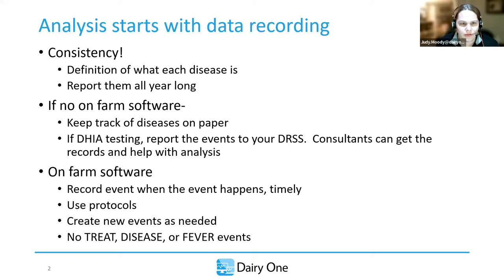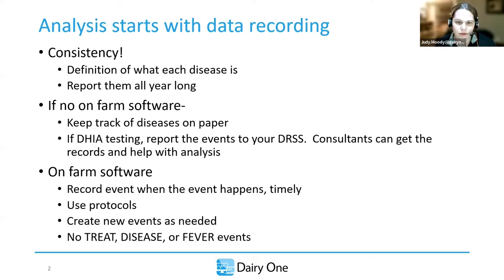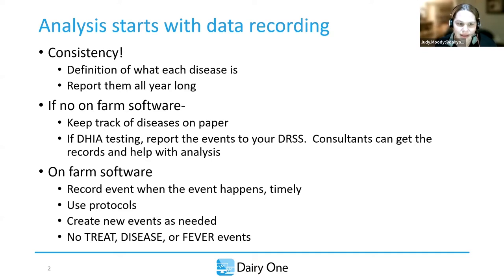For those on the call today that don't have on-farm software, keep track of your diseases on paper. If you're not testing, keep track of them in a notebook and share them with your consultants. If you are DHI testing, report your events to your record technician or DRSS, and the technician can enter that into their software. If you share your herd code and RAC code with your consultants, they can download your records and help with analysis.